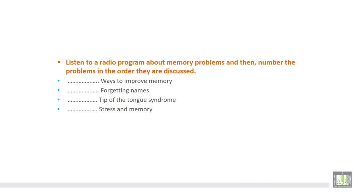So, let's start with the first one. What was the first topic discussed in this radio program? The first topic was about stress and memory. The second topic discussed was about forgetting names. The third topic was about ways to improve memory. And the last one was about tip of the tongue syndrome.